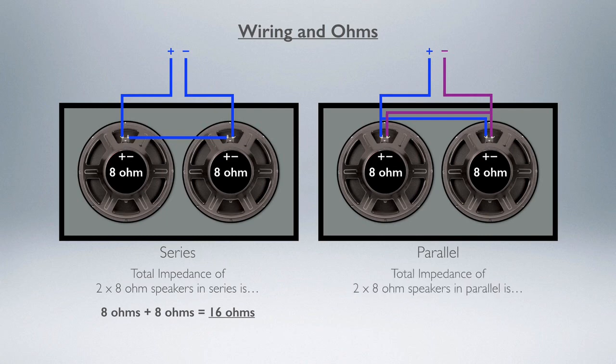Where in parallel, the total impedance of two 8-ohm speakers in parallel is 8 ohms divided by the number of speakers, so it's 4 ohms. So a lot of difference—16 ohms versus 4 ohms—depending on whether it's in series or parallel.